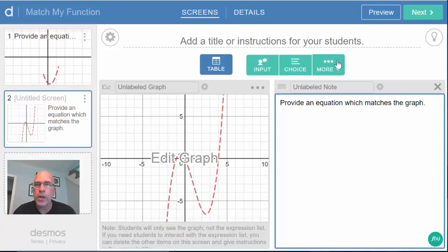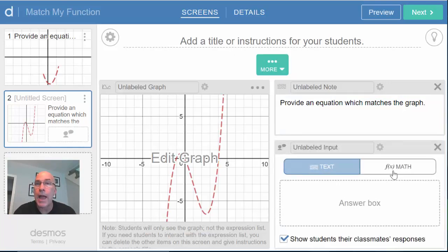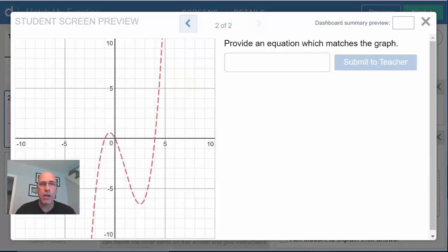And the note will tell students the instructions of provide an equation which matches the graph. And I'm going to have students input their answers using an input element in here. So I'm going to click input. And notice it's text or math. I want a math input here. And I do not want students to show their classmates' responses. I want this to be a one-on-one activity. What it looks like right now, provide an equation. But if I type something in here, like if I try this,